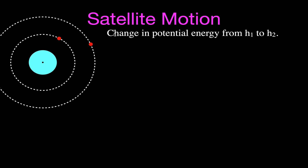This is satellite motion. We're going to first derive the equation for the change in potential energy when we raise a satellite from H1 to H2. H1 is the lower orbit at a height above the Earth, and we're going to increase its orbital height up to H2, the second height above the surface of the Earth. We have the Earth and we have the radius of the Earth in this example.